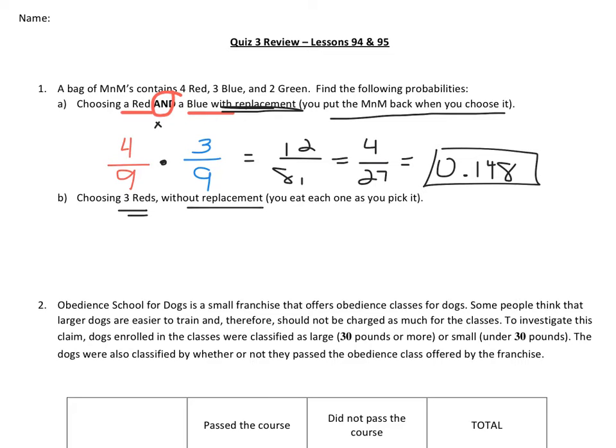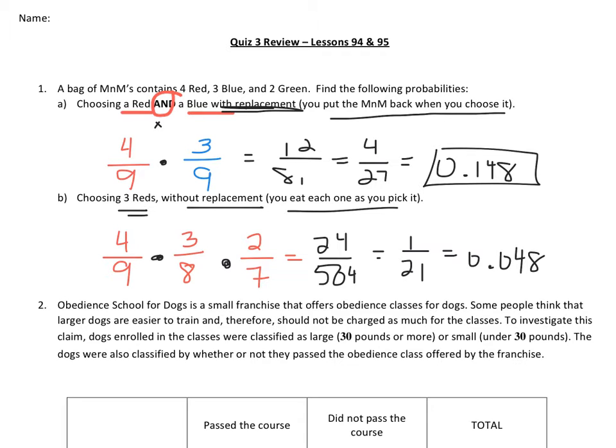The next one says choosing three reds without replacement, which means we would eat one as we pick it. So if I chose one red, that means that I would have four out of nine. And I'm choosing another one, because they're choosing a red and a red and a red. So this means I'm multiplying three numbers. So since I am going to eat a red, that means I'll only have three reds now in the bag. And also, the total of the bag would go down by one, because I ate from the total. So that would be eight. Then I'm going to eat another red. So that means that I would only have two reds left. And then, again, the total will go down again to seven. Multiplying these across, you'd get twenty-four out of five-oh-four, which reduces to one over twenty-one. But again, I usually like to write these as decimals.